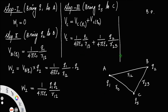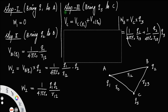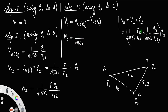The third work W3: work equals potential times charge, and the charge brought here is q3. So W3 = (1/4πε₀) × q1/r13 + (1/4πε₀) × q2/r23, all times q3. This simplifies to: W3 = (1/4πε₀) × q1·q3/r13 + (1/4πε₀) × q2·q3/r23.